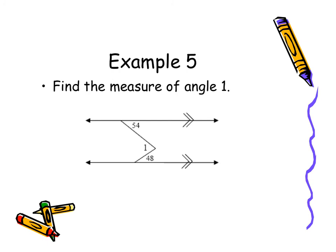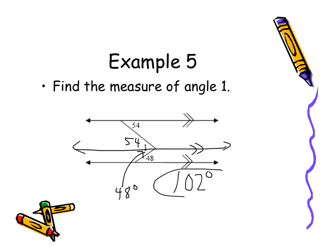Let's try another crook problem. Draw that third parallel line through the vertex. This creates an alternate interior angle to the 48°, so that piece is 48°. The other piece is an alternate interior angle to the 54°, so it's also 54°. Adding 54 + 48 gives us 102 degrees.